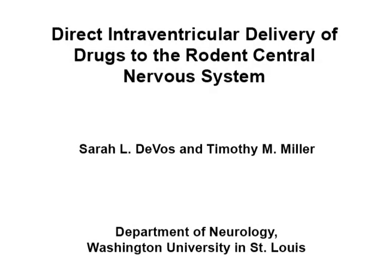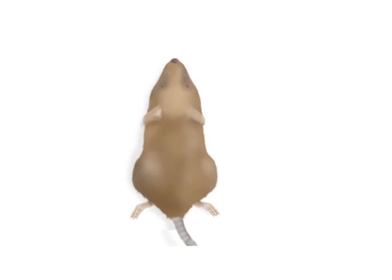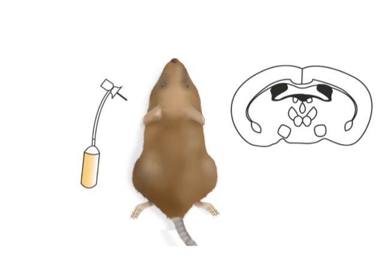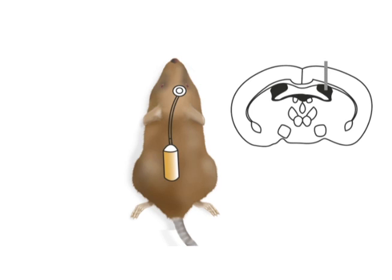The overall goal of the following experiment is to directly administer drugs, such as antisense oligonucleotides, as seen in this protocol, into the rodent central nervous system by means of the lateral ventricle. This is achieved by two different methods. The first involves surgically implanting a metal catheter connected to an Alzet osmotic pump into the right lateral ventricle of the mouse.